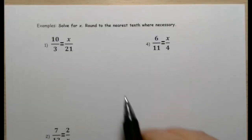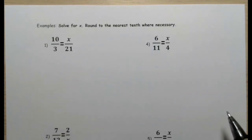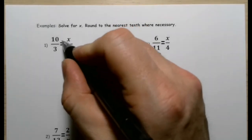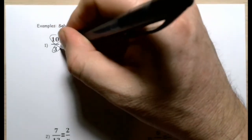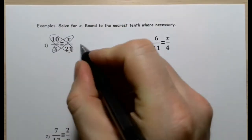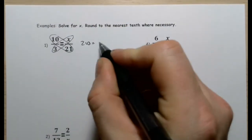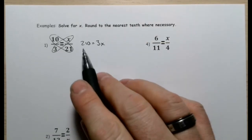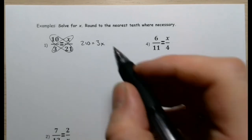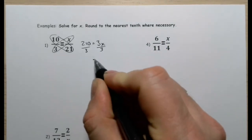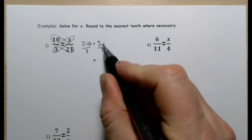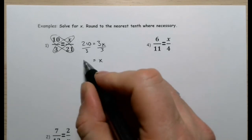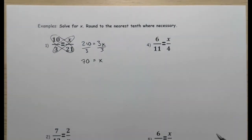Now let's look at some examples — we're going to solve for x, rounding to the nearest tenth where necessary. First: ten-thirds equals x over 21. We multiply across the equality: 10 times 21 is 210, and 3 times x is 3x. So 3x equals 210. Dividing both sides by 3 — three divided by three is one, so we just get x — and 210 divided by 3 is 70. So x equals 70.